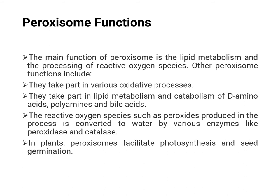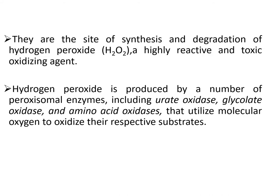In plants, peroxisomes facilitate photosynthesis and seed germination. These organelles were named peroxisomes because they are the site of synthesis and breakdown of hydrogen peroxide, a highly reactive and toxic oxidizing agent. Hydrogen peroxide is produced by a number of peroxisomal enzymes including urate oxidase, glycolate oxidase, and amino acid oxidase, which utilize molecular oxygen to oxidize their respective substrates.